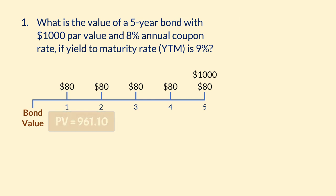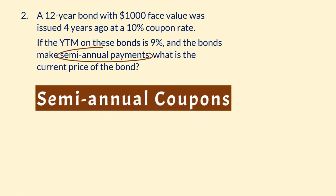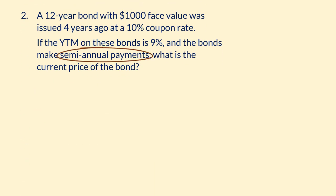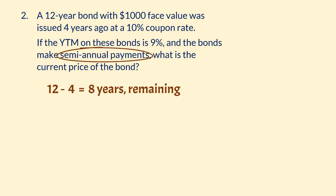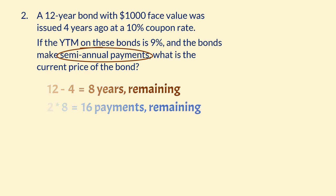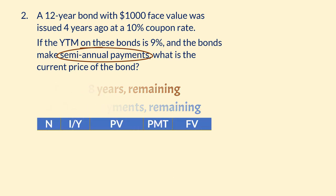Our second example involves semi-annual coupons, which is typically how bonds are issued in the US and Canada. This 12-year bond was issued 4 years ago, which means we have 8 years left to go. Since the bond makes semi-annual payments — that is, twice a year — we have 2 times 8 equals 16 payments. That is, N equals 16.